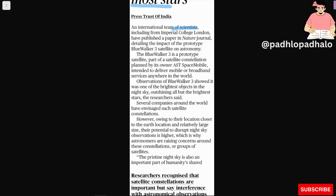An international team of scientists including Imperial College London has published a paper in Nature detailing the impact of the prototype Blue Walker 3 satellite on astronomy. Blue Walker 3 is a prototype satellite, part of a satellite constellation planned by AST Space Mobile, intended to deliver mobile broadband service anywhere in the world.